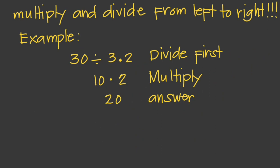Another example: given 30 divided by three times two, we divide first from left to right. So 30 divided by three gives us 10, then we multiply 10 by two to get 20 as our answer.